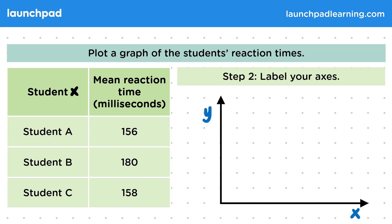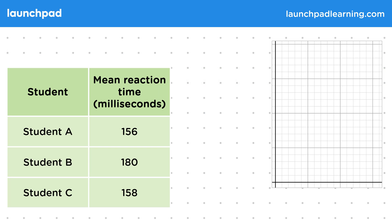The convention is that the column on the right will go on the Y axis. The column on the right usually shows the results which are the dependent variable. That's what's measured in the experiment. So reaction time is going on the Y axis and remember to include units. In this case, it's milliseconds. And the dependent variable, the student will go on the X axis. And remember, this is a categoric variable. So we can just label this as A, B and C.